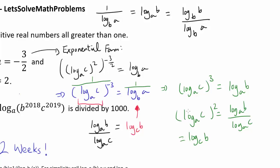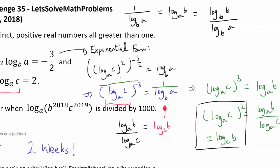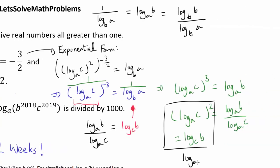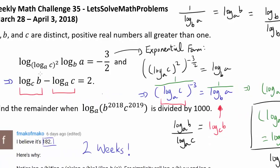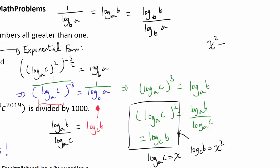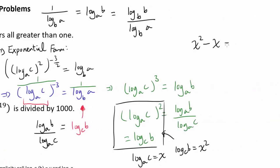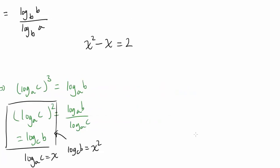Now, all we have to do is connect this to the second equation. Let's say log base a of c equals x. Then log base c of b equals x squared. From the second equation, log base c of b minus log base a of c equals 2, so x squared minus x equals 2, giving us x squared minus x minus 2 equals 0.